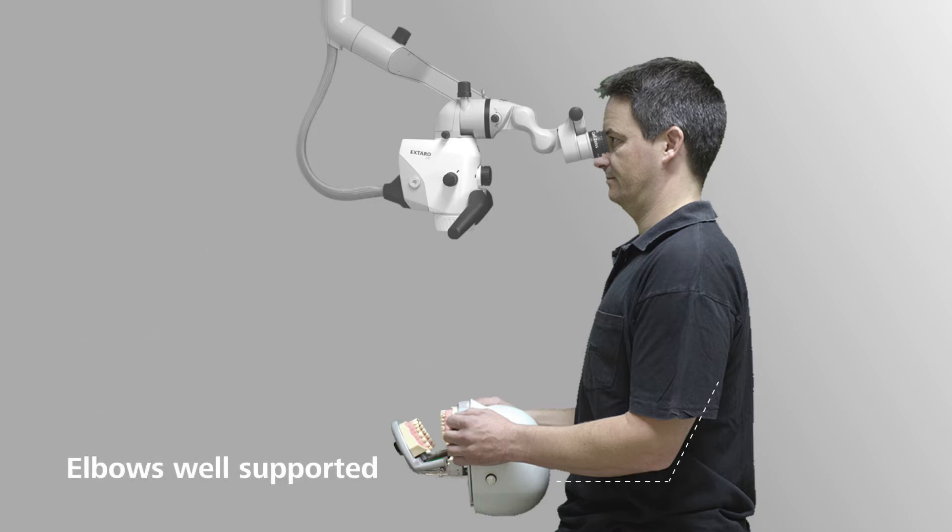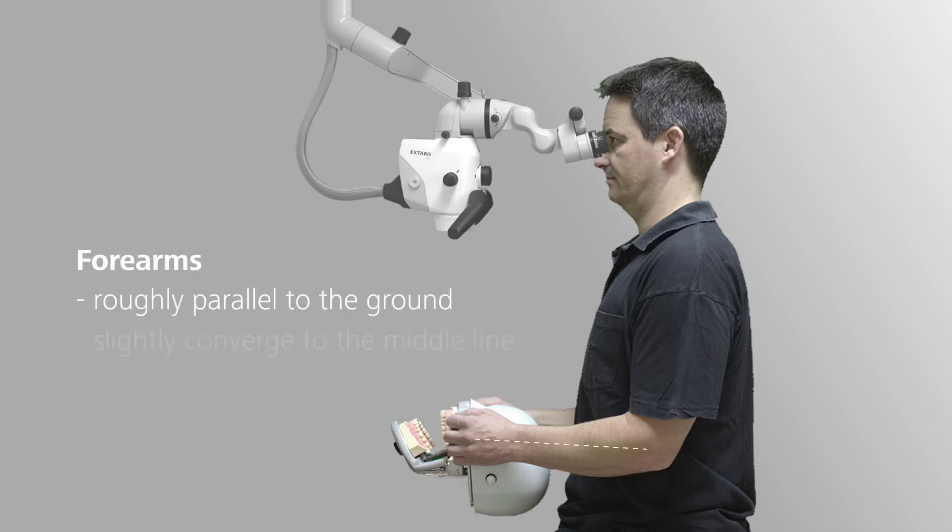Your elbows and forearms should be well supported, ideally by the armrests of a dental chair. Your forearms should be slightly angled towards the midline and be roughly parallel to the ground. Adjusting the microscope and your posture in the way shown can help prevent posture-related musculoskeletal disorders.